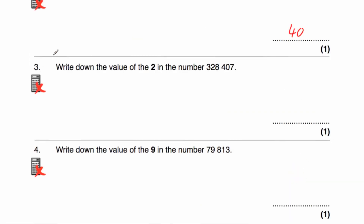Question number 3 says write down the value of the digit 2 in the number 328,407. So let's consider our columns. We've got our units or our ones, our tens, our hundreds, our thousands, then our tens of thousands, and finally our hundreds of thousands. As you can see the 2 is in the tens of thousands, so it represents 20,000.